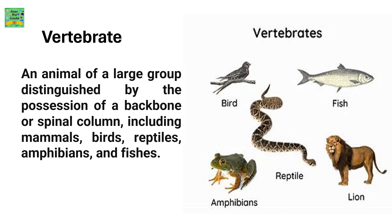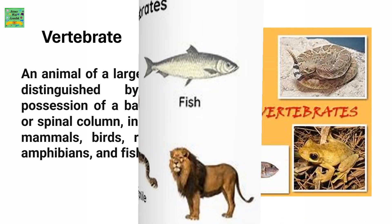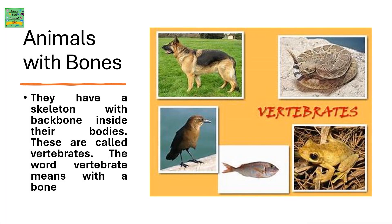Vertebrates include birds, fish, reptiles, and amphibians. Animals with bones have a skeleton with a backbone inside their bodies — these are called vertebrates. The word vertebrate means with a bone.